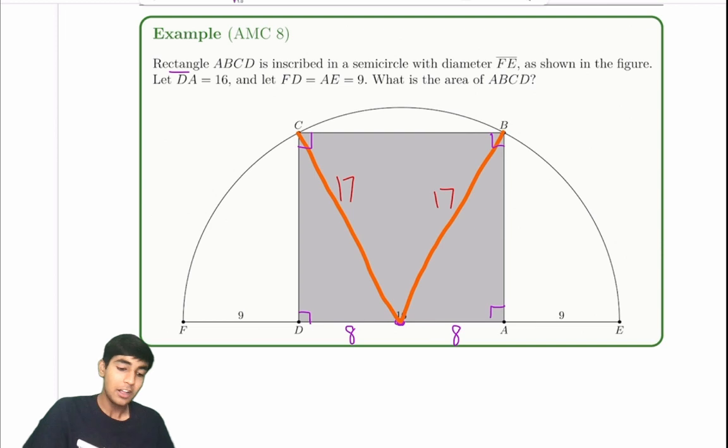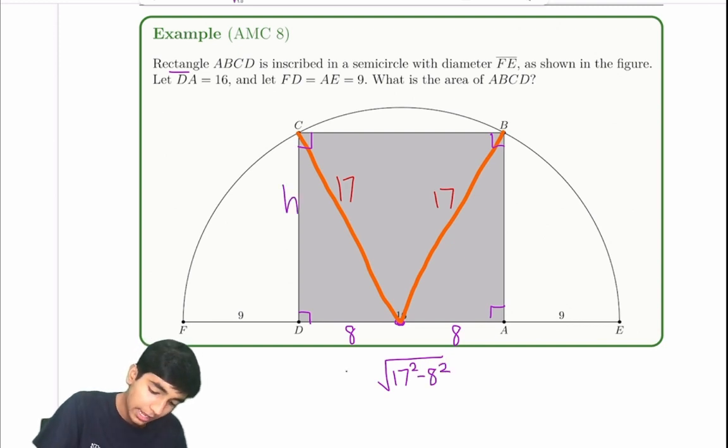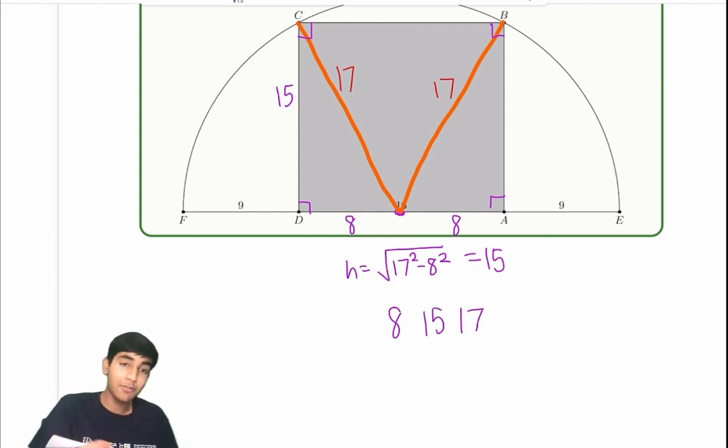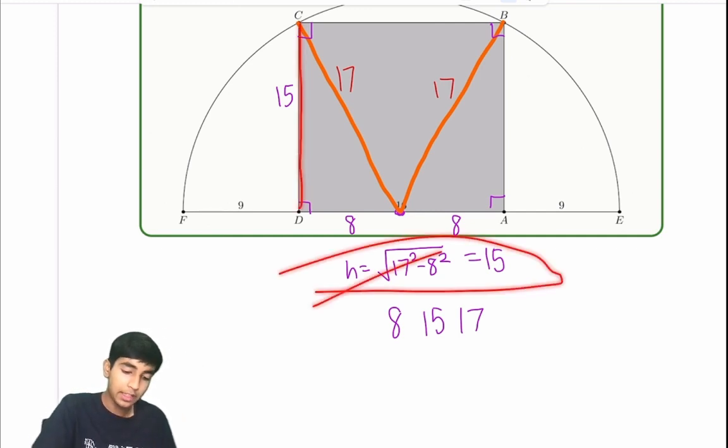So if we didn't know Pythagorean triples, you could have just done Pythagorean theorem. Square root of 17 squared minus 8 squared equals height. That's one way, and you would have gotten 15. But a clever way is to see that if the hypotenuse is 17, one of the legs is 8, then we can immediately see 8, 15, 17 right triangles. That's a Pythagorean triple.